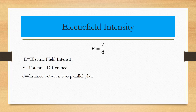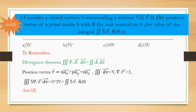Next, we are going to see electric field intensity. We have already seen the definition for electric field intensity, but here for capacitance we use another definition: E = V/D, where V is the potential between the two parallel plates and D is the distance between the two parallel plates.